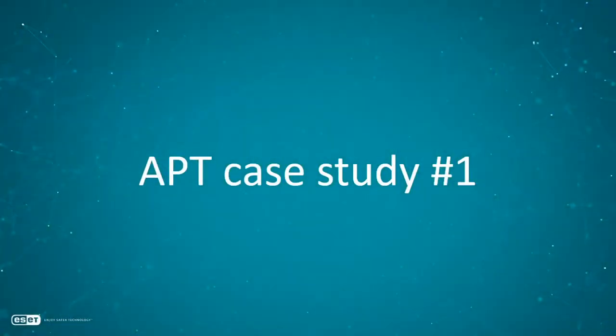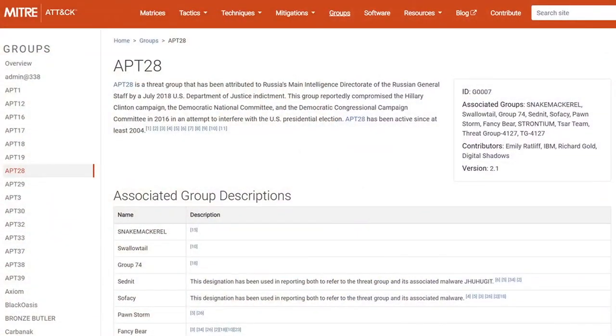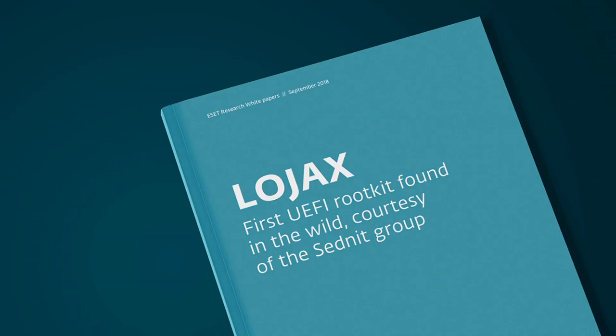Let's get to those APTs and those interesting techniques. This is not going to be a comprehensive listing at all — that would make for a much longer presentation — just some highlights which I thought were really interesting and noteworthy. The first group: because of the lack of time, I selected one particular piece of software they were using. That was APT28, also known as FancyBear or Sednit. Last year we found out that they used the first UEFI rootkit found in the wild, which was a pretty significant deal.